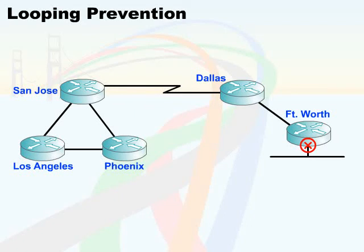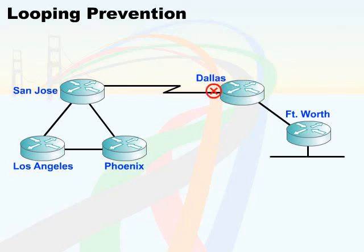Let's go back to the example. Here we have an outage on Fort Worth. Fort Worth, when using a flash update — which RIP and IGRP do — will not wait for the 30-second interval before it advertises the outage. Instead, as soon as the outage is detected, it advertises it to Dallas. As soon as Dallas gets it, Dallas passes it on to San Jose. As soon as San Jose gets it, it passes it on to both Los Angeles and Phoenix. It doesn't wait for the normal timer to expire at the specified interval to advertise that the router is no longer available.